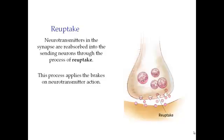An example of a reuptake inhibitor is cocaine. Cocaine inhibits and blocks the reuptake of dopamine. You may also have heard of drugs for treating depression such as Prozac, which belongs to a category called SSRIs — Selective Serotonin Reuptake Inhibitors. This means reuptake of serotonin is blocked, which increases serotonin activity in your brain.